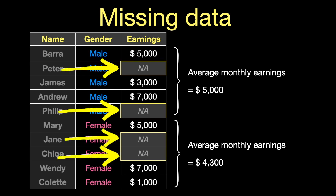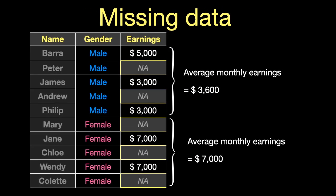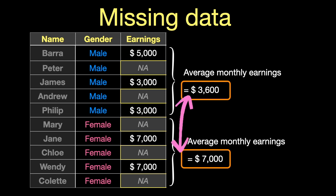Now let's look at the same data set but imagine there is some missing data — NA, not available. In this example, imagine that the distribution of the missing data is random. You can see that the average earnings difference between men and women hasn't changed much, because the missingness is random and the missing data is evenly distributed between the two groups. But if we look at another example, there's missing data that seems evenly distributed and yet in this case there is a substantial impact on average income. The reason is that the missingness isn't random — there's a pattern to it, but the pattern isn't obvious.